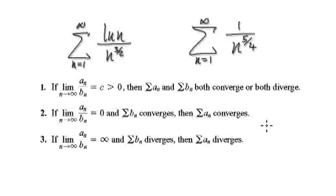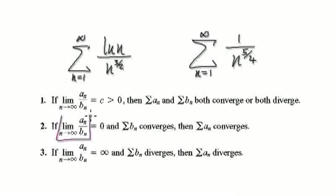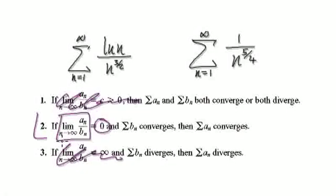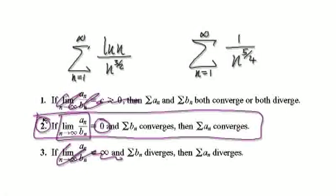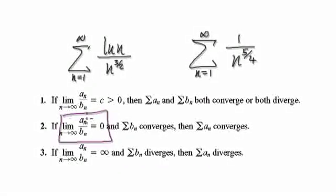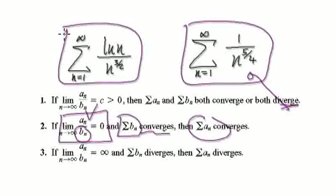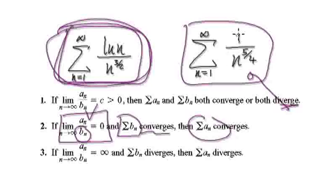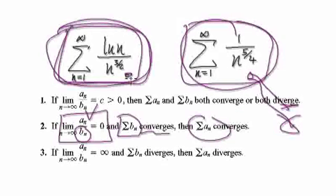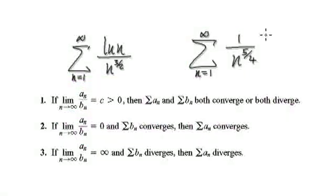Going back to the theorem, we now know that the limit of AN over BN equals zero. So cases one and three are out of the equation — we are looking at scenario two. If this condition has been satisfied, the theorem says: if BN converges — which we know this series does converge — then AN must also converge. So this series here, which we knew nothing about, must also converge.